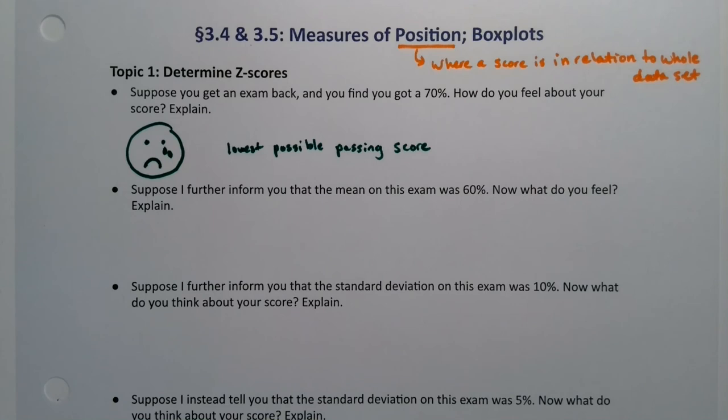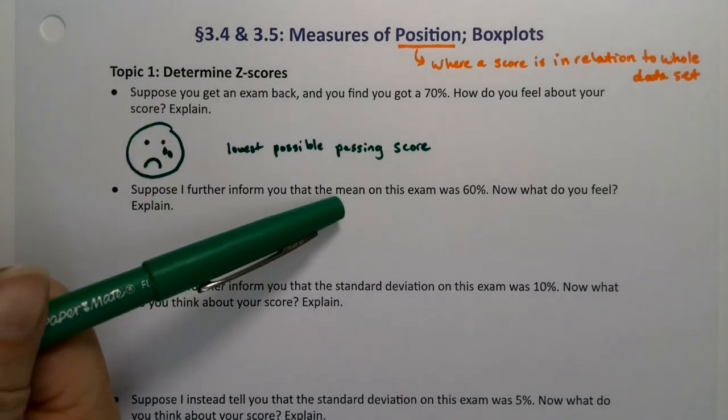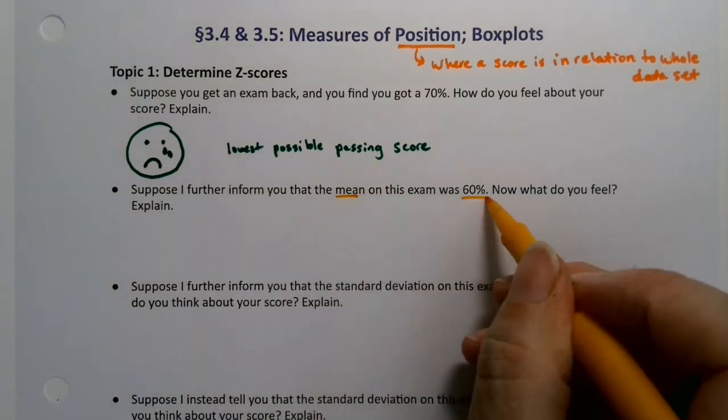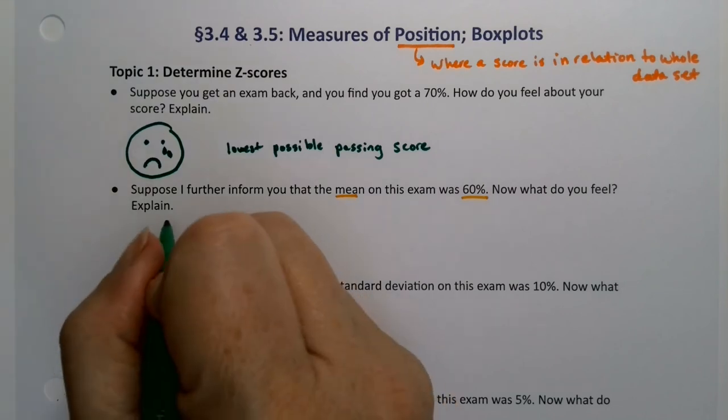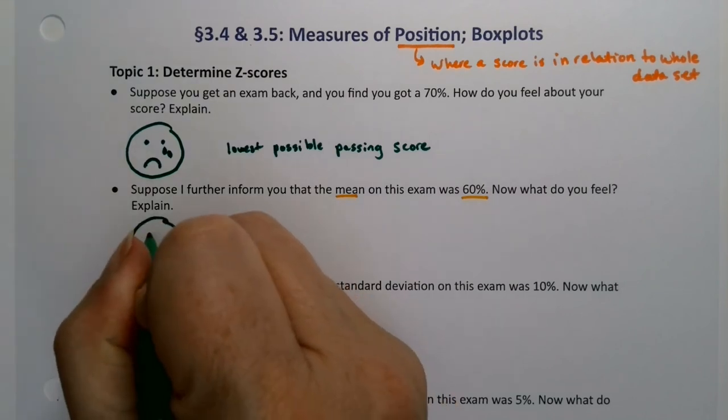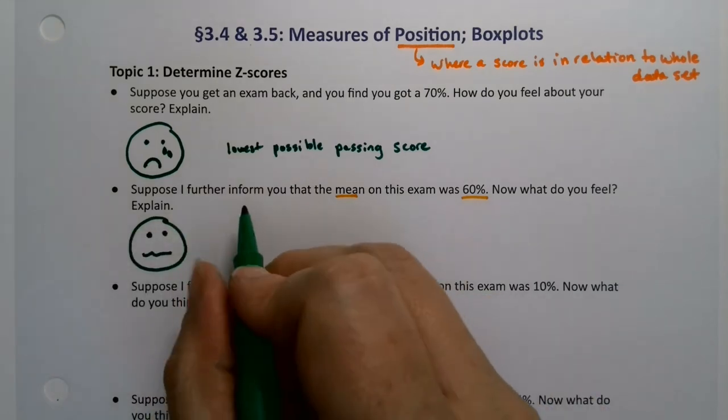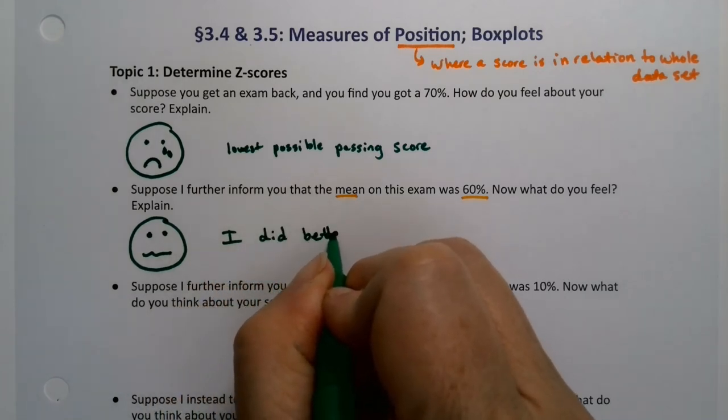You might not pass the class if you score 70 all the time. But suppose I then tell you, hey the mean, right, the center in this class was 60. Now how do you feel? Well now you're feeling a little bit better, right? So you still scored a 70, I grant you, but now you're thinking, hey I did better than half the class. That makes me feel better.